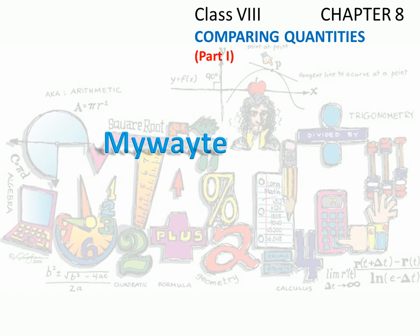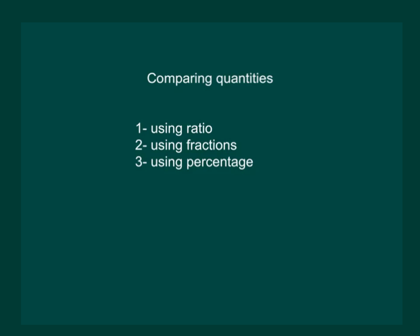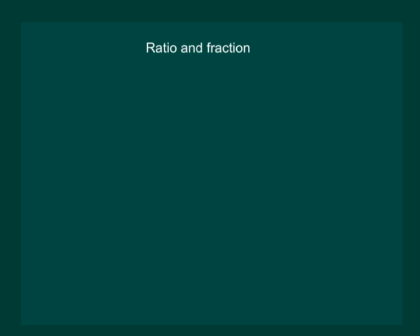Hello friends, this video is brought to you by mywayteaching.com. Let us start the chapter on comparing quantities. In this video we shall compare numbers using ratios, using fractions, and using percentage. Ratio is one of the tools for comparing two quantities. Let us take an example to understand how ratio can be used for comparing two quantities.